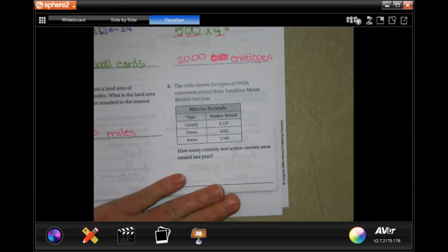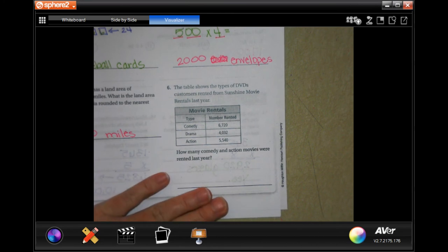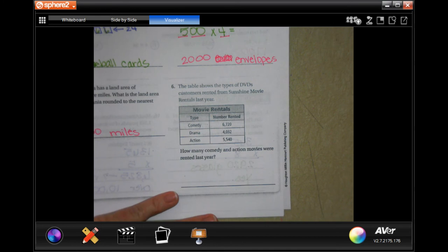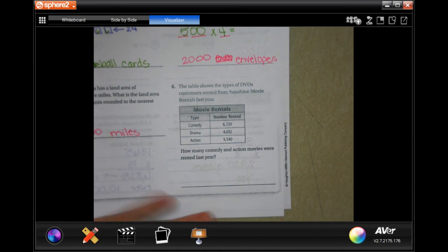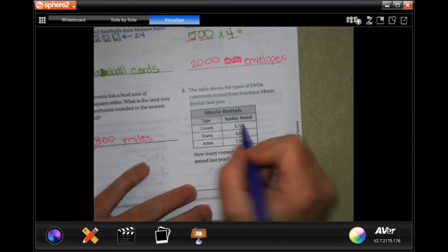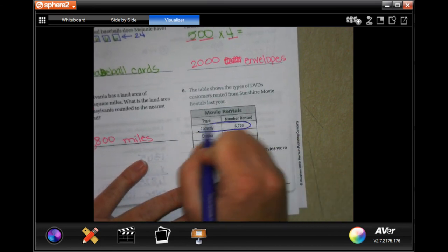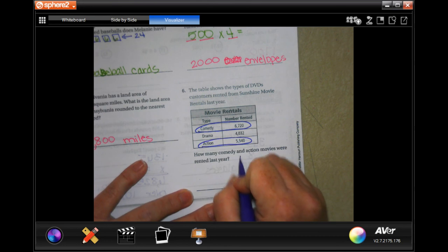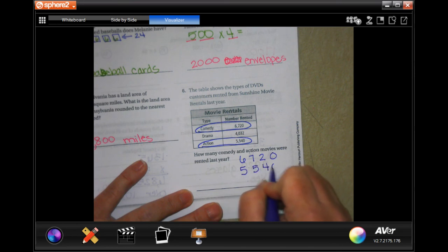The table shows the type of DVDs customers rented from Sunshine Movie Rentals last year. How many comedy and action movies were rented last year? So all we have to do is add them up. Comedy and action. We're going to have 56,720 and 55,400, and add them up.